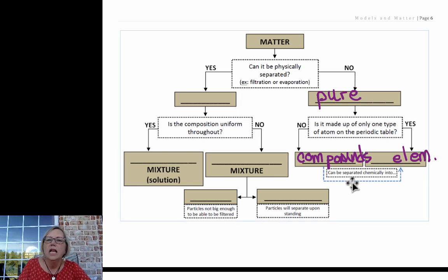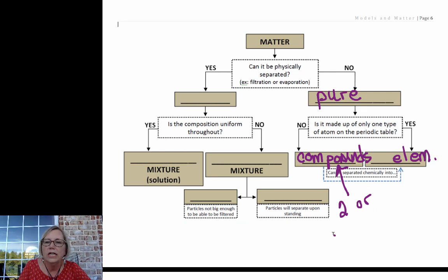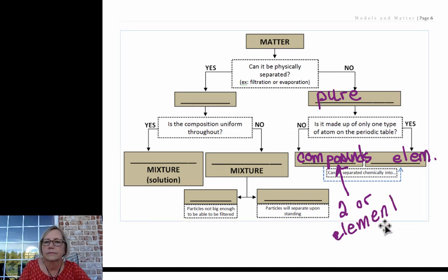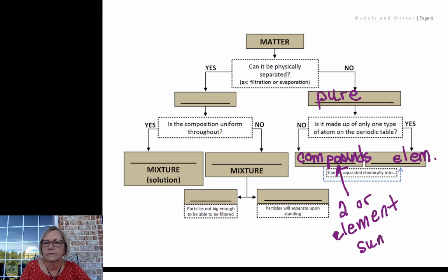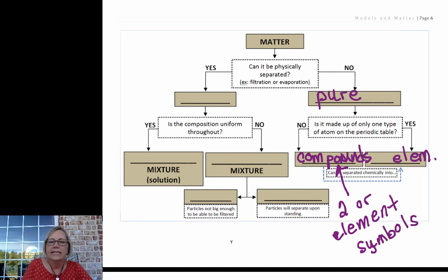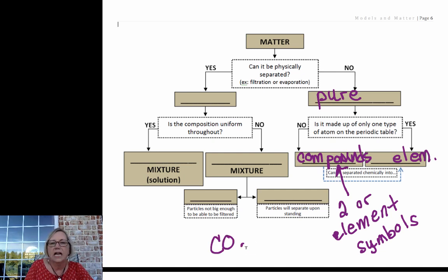A compound requires two or more element symbols. So examples: carbon dioxide—two symbols, a symbol for carbon and a symbol for oxygen.